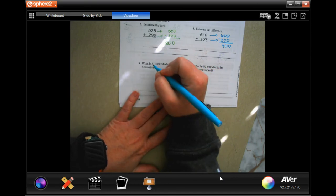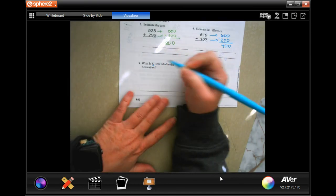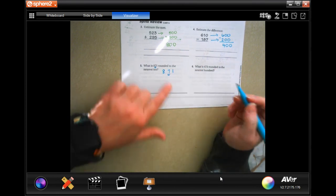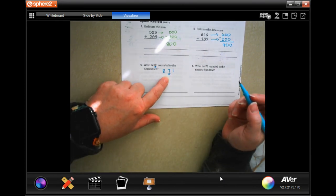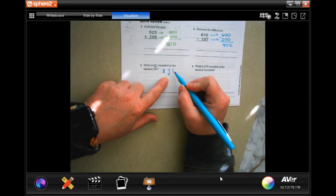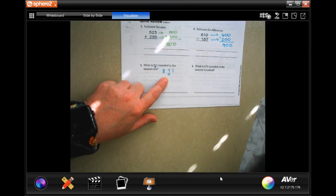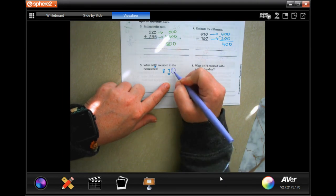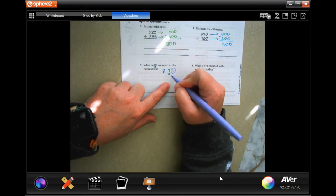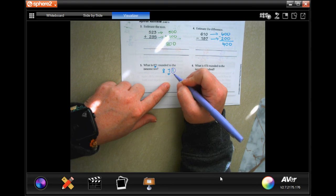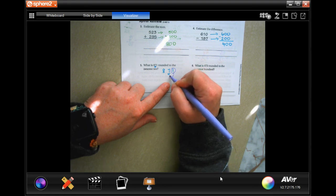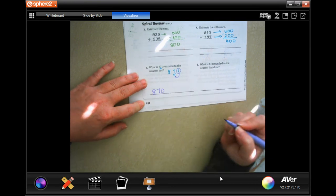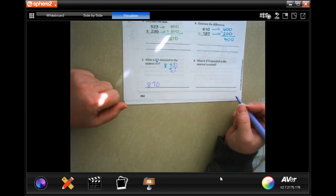So, what is eight hundred and seventy-one rounded to the nearest ten? Well, eight seventy-one, and we want to know if that seven needs to go up to an eight or stay a seven. In order to do that, we're going to look at the number that's next to it. If that number is five or bigger, then the seven's going to go up. If it's not, then it's going to stay the same. Well, one is smaller than five, which means the seven stays the same.